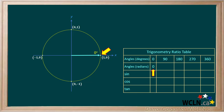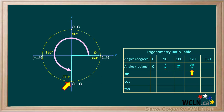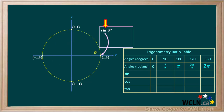0 degrees is equal to 0 radians. 90 degrees is equal to pi over 2 radians. 180 degrees is equal to pi radians. 270 degrees is equal to 3 pi over 2 radians, and 360 degrees is equal to 2 pi radians. Now we'll determine values for the four angles we have using their coordinates.